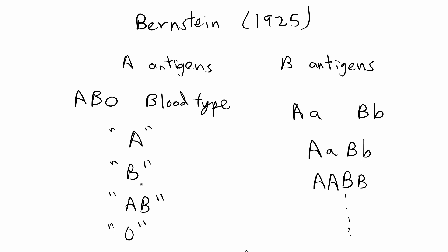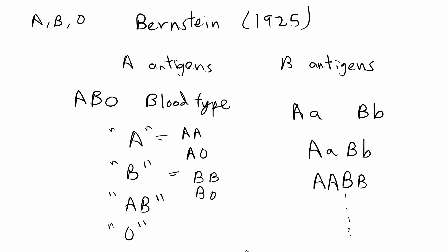This is based on an inheritance pattern where you have three different alleles for your blood: A, B, or O. The A and B alleles are both dominant over O. If you have A, it will be dominant and you'll have blood type A; if you have B, it will be dominant over O. Blood type O means you have two recessive alleles. If you have phenotype A, you can be either AA or AO — having just one A allele shows dominance and you'll still react to the A antigen. Same thing with B: you could be BB or BO genotypically, but phenotypically you'll be observed as blood type B.